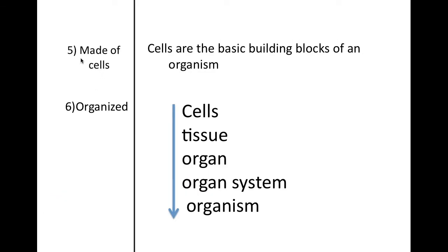All living organisms are made of cells. These cells are the basic building blocks of an organism. The sixth characteristic is that our cells are organized. Cells create tissues, tissues become organs, and organs are part of a larger system. Organ systems then come together to create an organism.